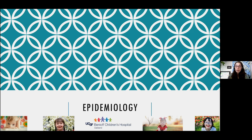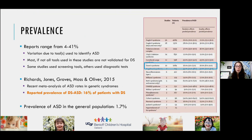Let's start with epidemiology. How common is autism in children with Down syndrome? From the literature review, we found that reports of prevalence range from 4% to 41%. This wide variation is in part due to the fact that different tools are used in different studies to identify autism, and that most, if not all, of these tools are not validated specifically for individuals with Down syndrome.